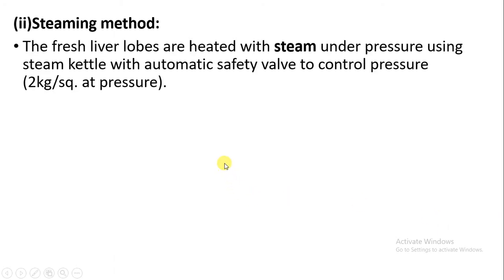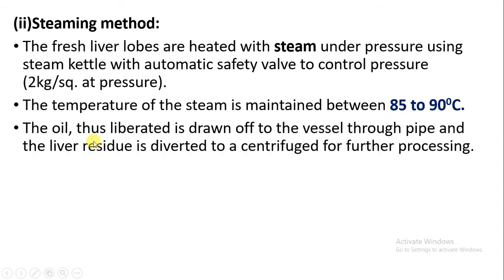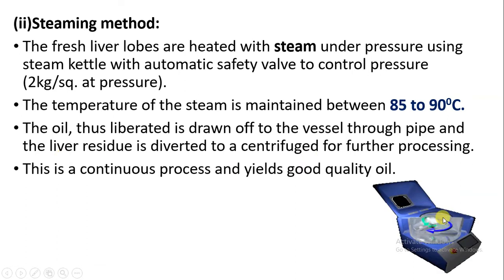The next is the steaming method. In this method, fresh liver lobes of the fish are heated using steam under great pressure. A steam kettle and automatic safety valve are used to control pressure. The steam pressure is between 80 to 90 degrees Celsius. Oil is extracted through pipes and collected into a vessel. The remaining liver matter is further subjected to centrifugation, and in this continuous process a good quality oil is yielded.